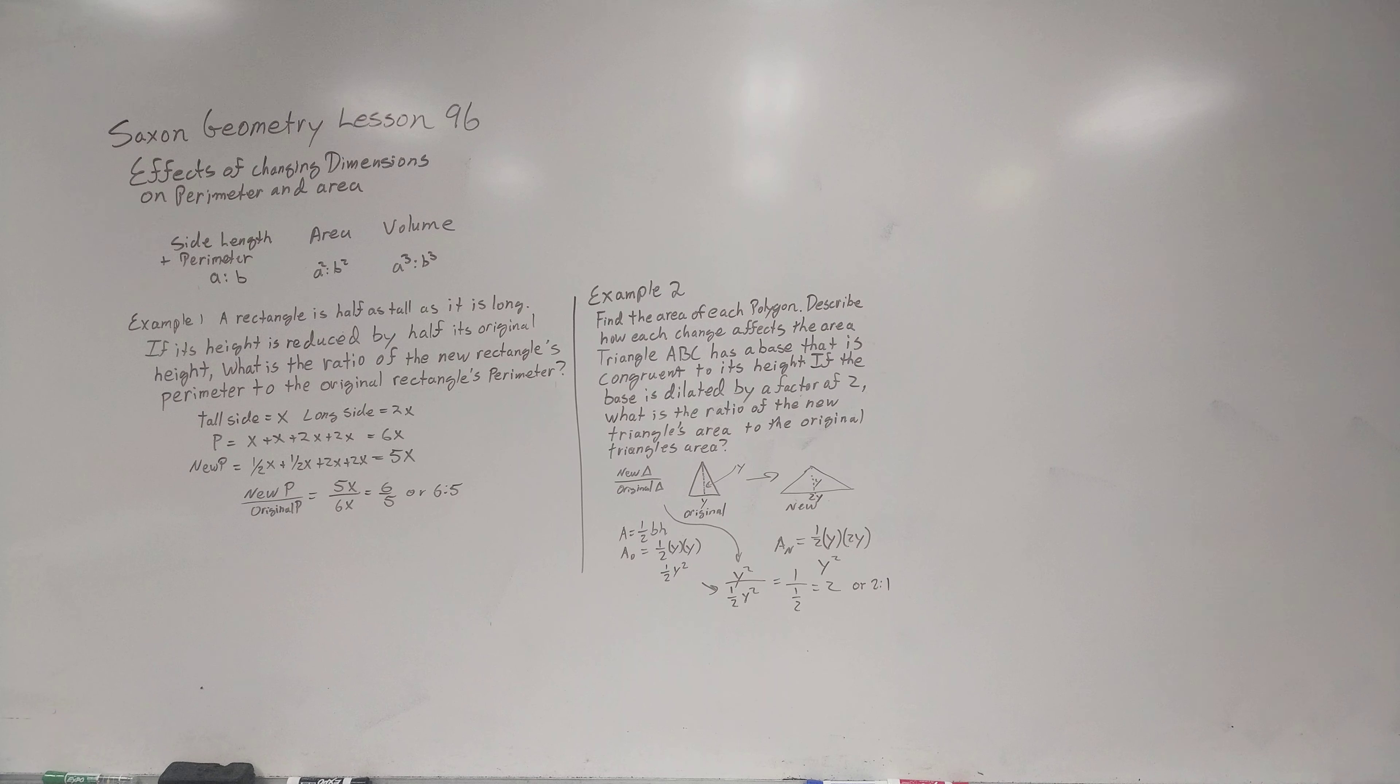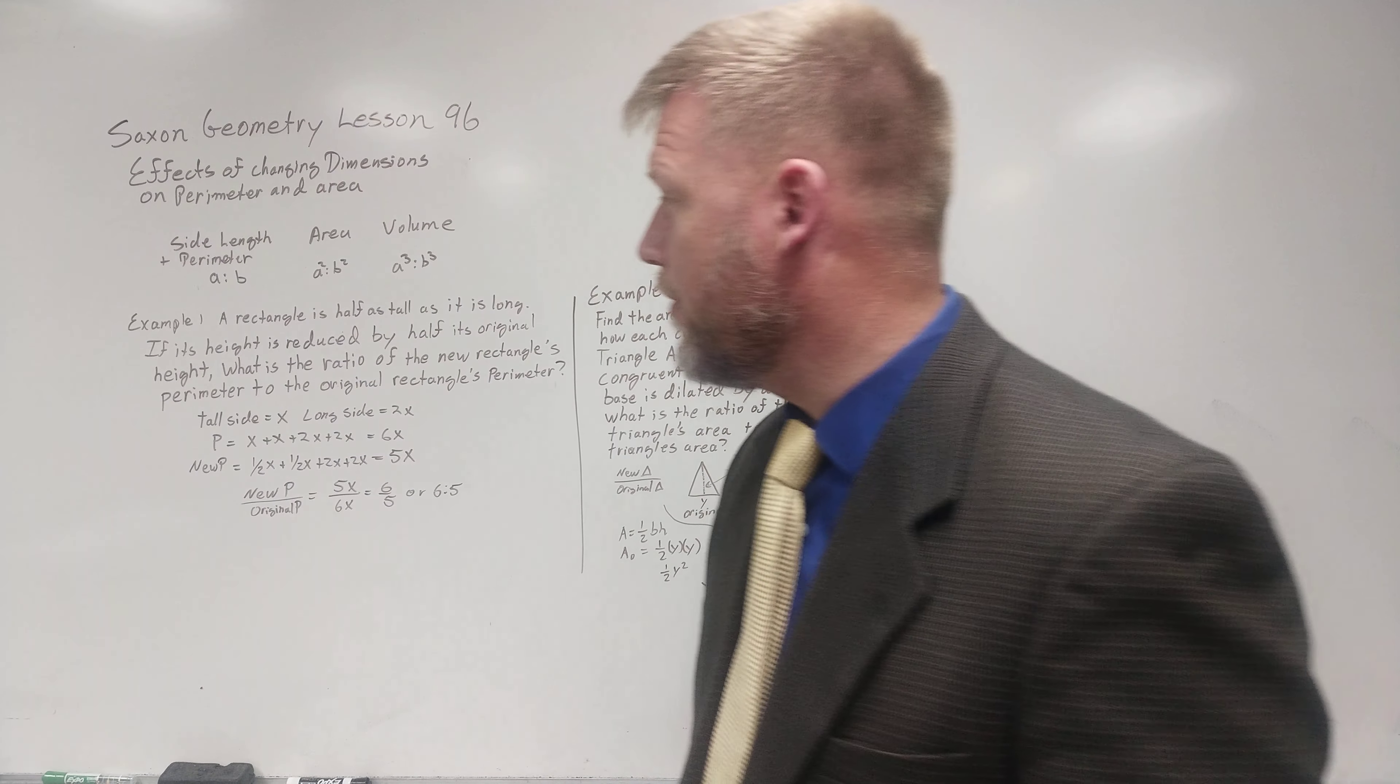This is Saxon geometry, lesson 96. This is effects of changing the dimensions on perimeter and area.